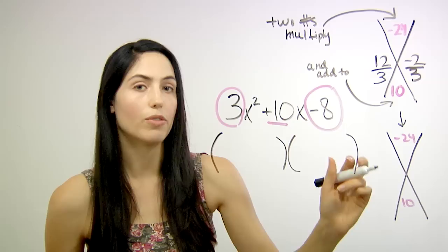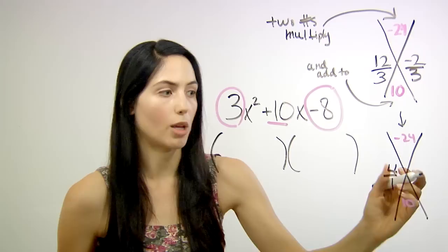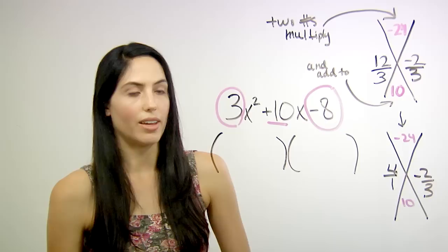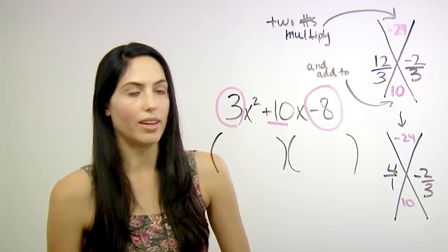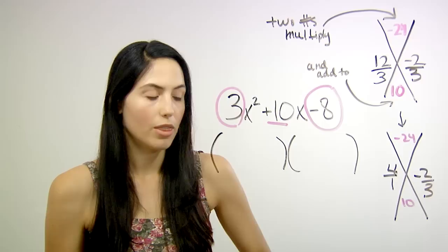12 over 3 simplifies to 4 over 1. Negative 2 over 3 stays the same. It's already in simplest form. You're almost done with factoring. You're going to use these fractions to write your final factoring.